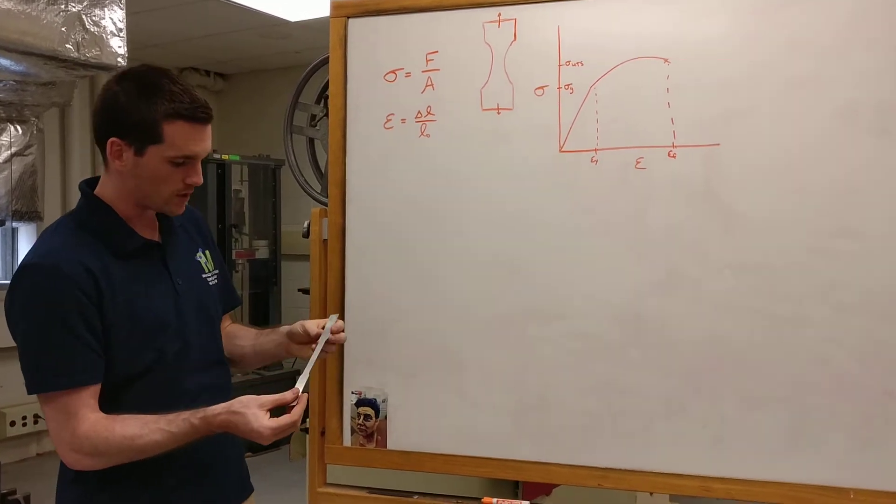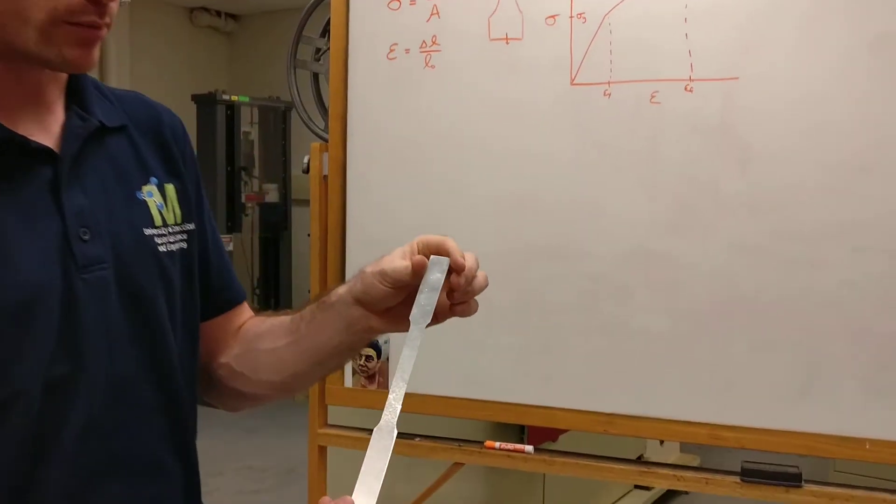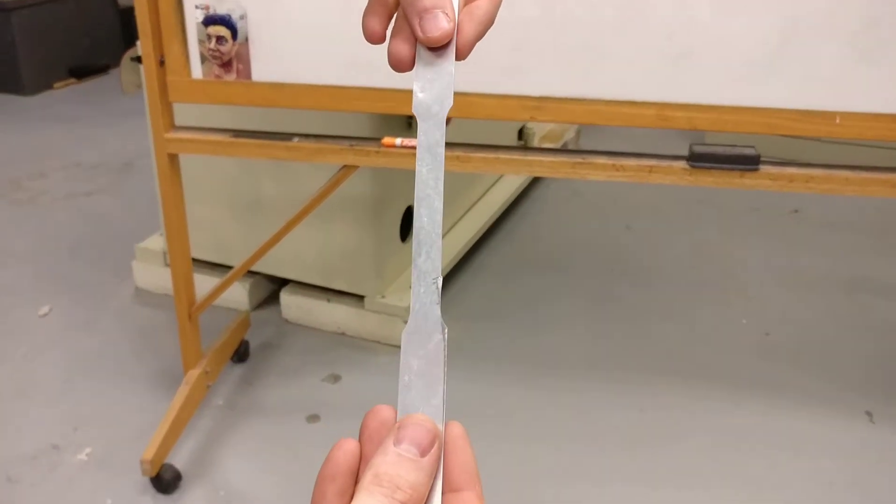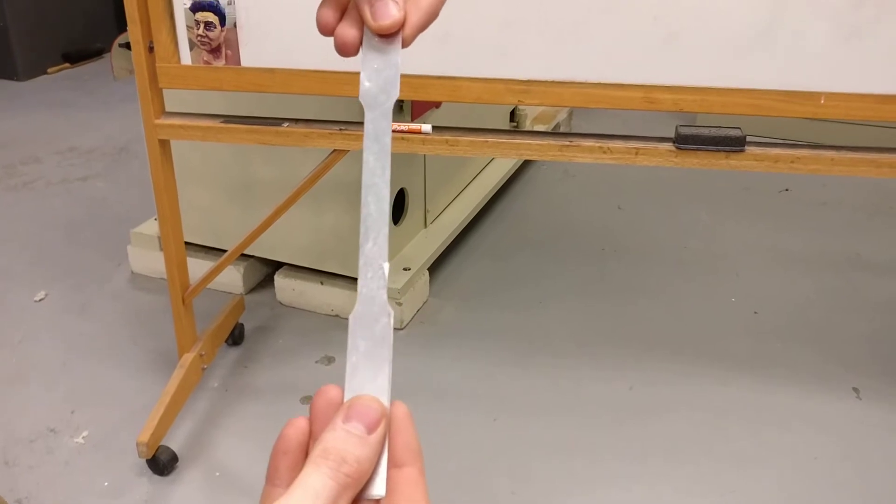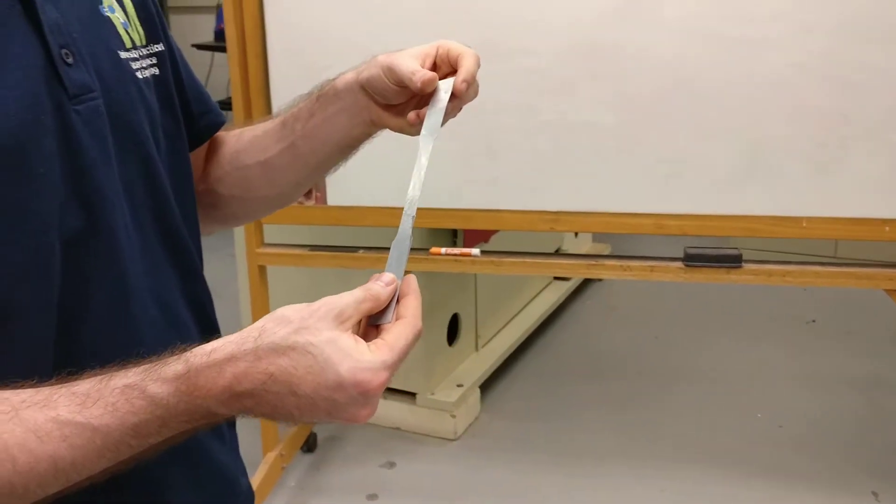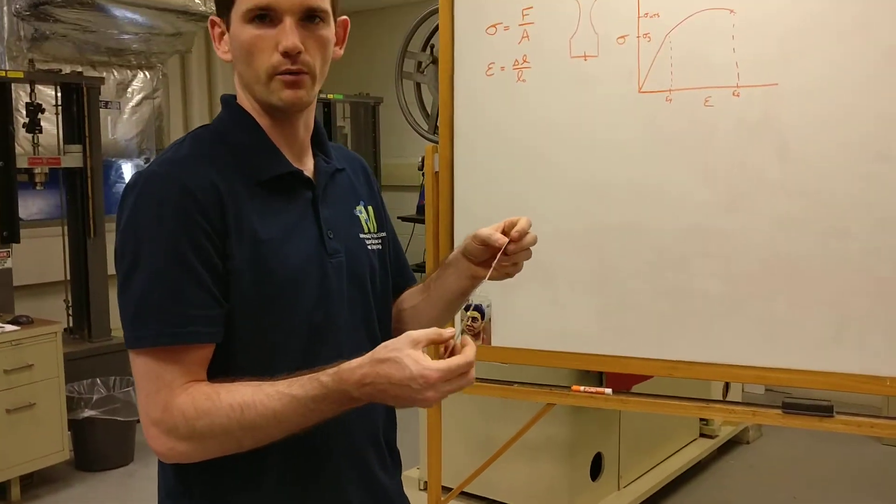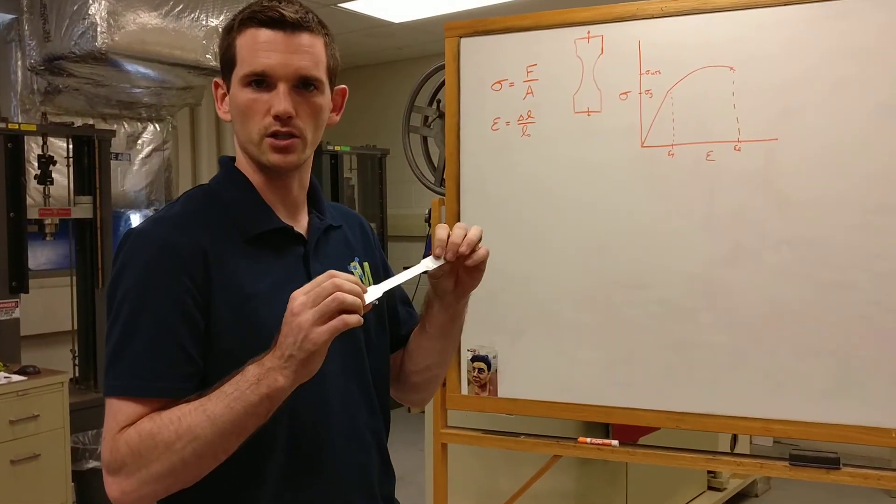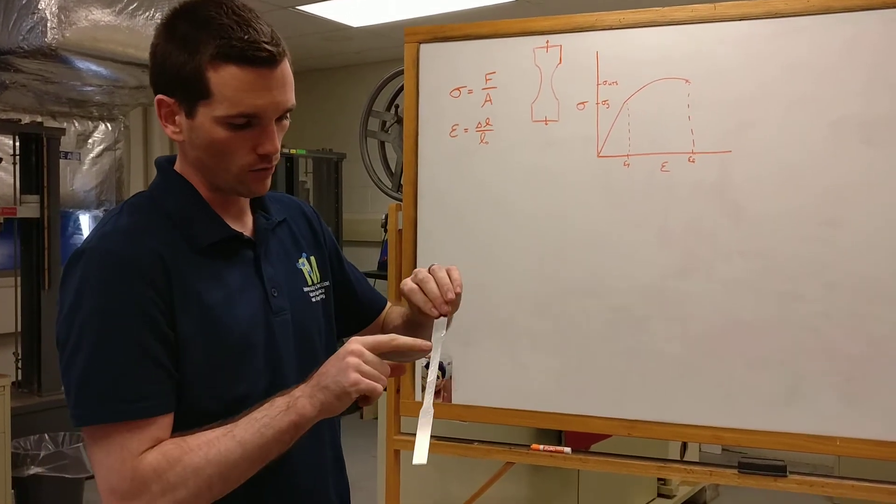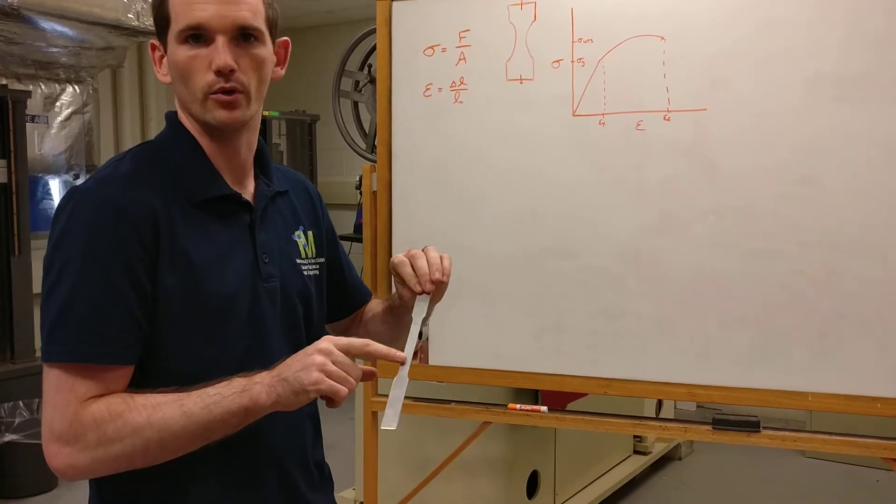Now you'll notice it has kind of a weird shape. This is called a dog bone sample. You'll notice it's reduced in the middle. That's because we're going to grip it on the ends of the sample and pull it. And we don't want those grips to affect where the sample breaks. We don't want it to create any local concentrations of stress or affect the strength in those areas. So we're basically making sure that it fails somewhere in the middle here.